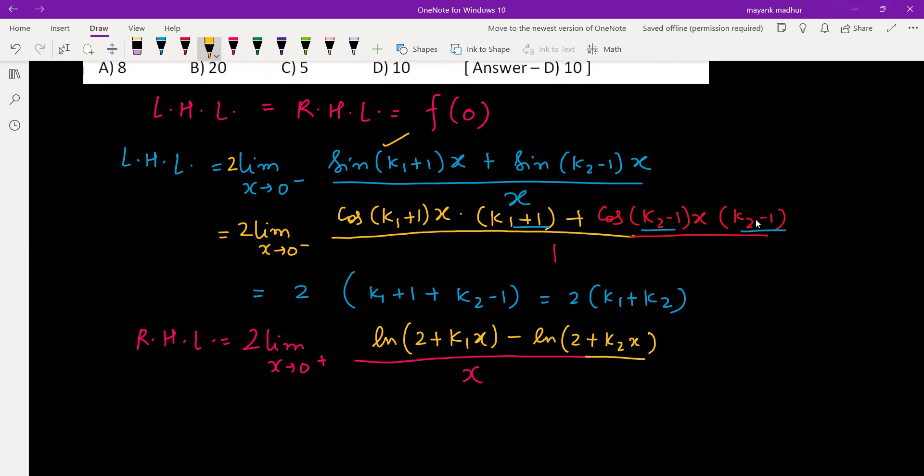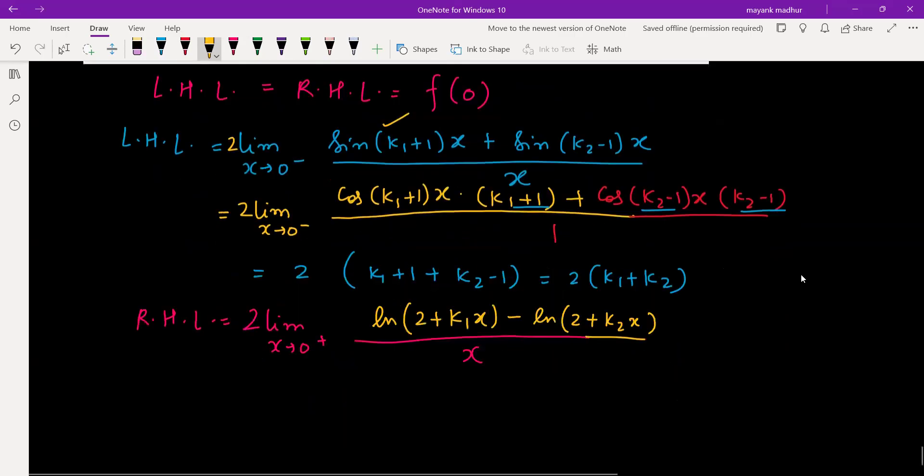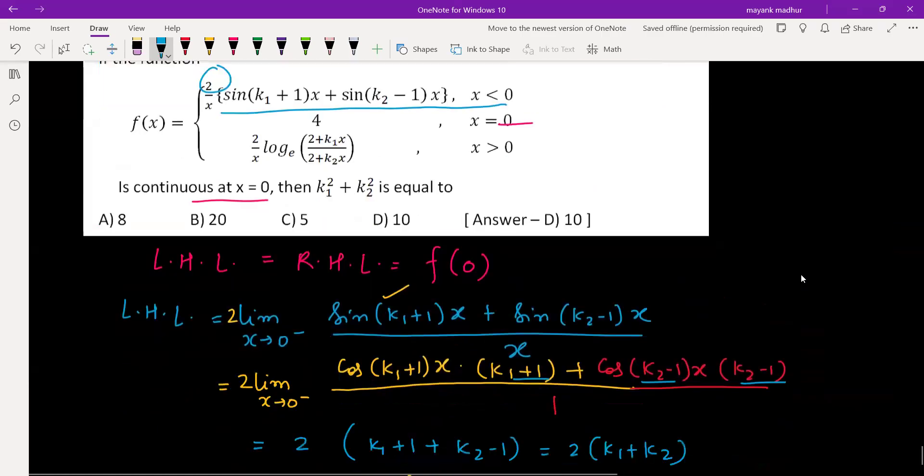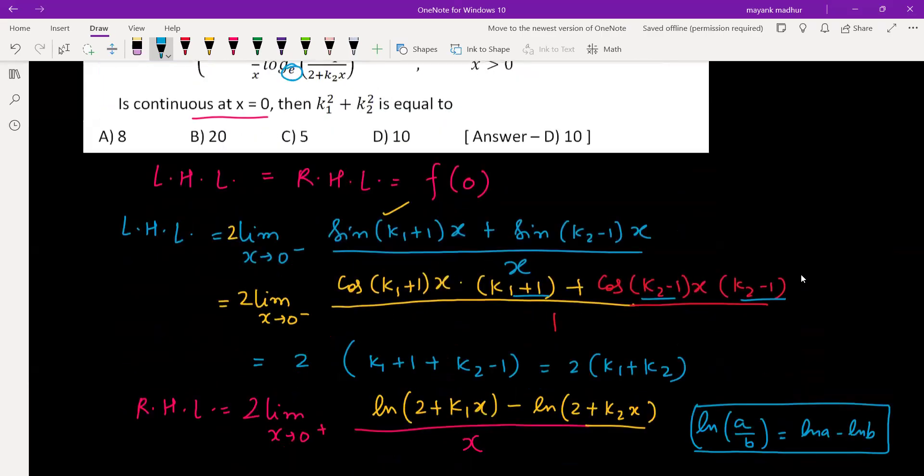Here we have used the property that log(a/b) is log(a) - log(b). Basis e here—when we are writing ln means log is having base e throughout, basis e.